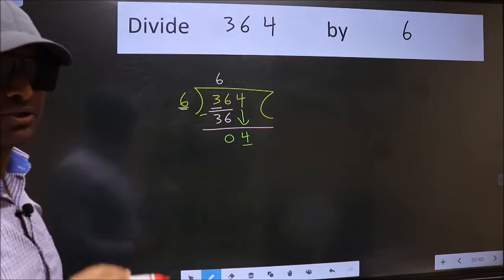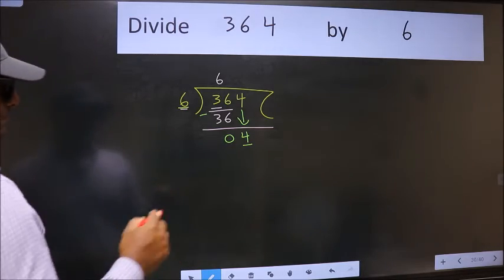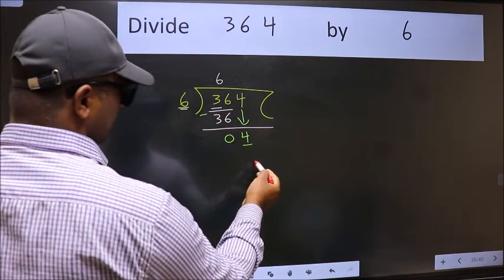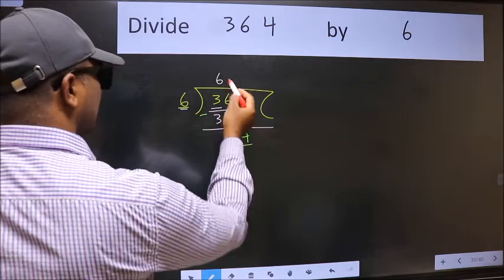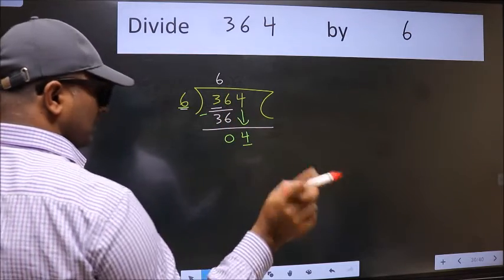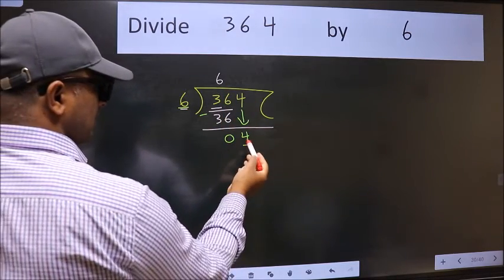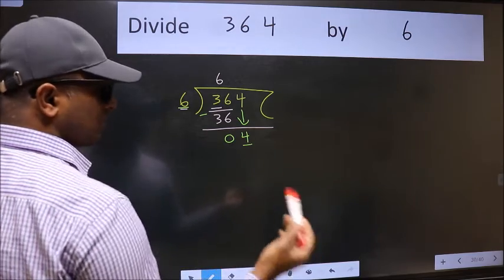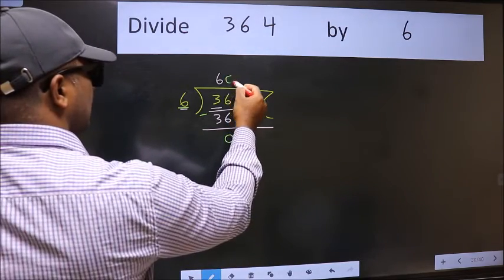Instead of that, what you should think of is which number should we take here. If I take 1, we will get 6, but 6 is larger than 4. So what we do is take 0.